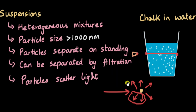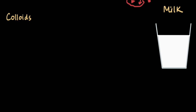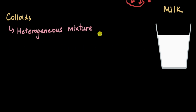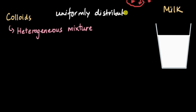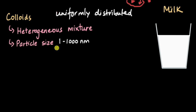Now let's move on to colloids. Here we have milk as our example. The first property is that it is a heterogeneous mixture — even though the particles in a colloid are uniformly distributed, it is still a heterogeneous mixture. The particle size in a colloid is between that of a solution and a suspension: 1 to 1000 nanometers — smaller than a suspension but much larger than a solution.